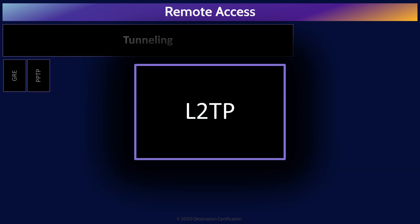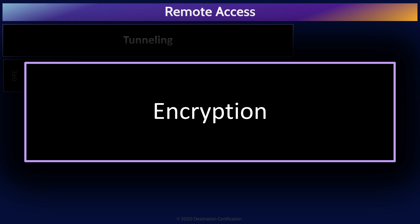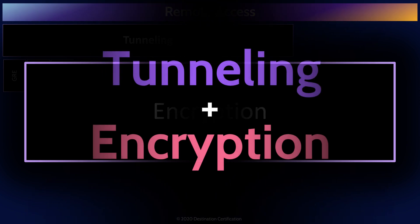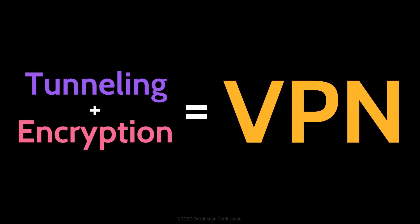L2TP, Layer 2 Tunneling Protocol, is a successor to PPTP and includes many improvements, such as the ability to encrypt its control messages. But very importantly, L2TP on its own does not encrypt the data portion of a packet. Tunnels are typically used to connect two private networks together over the public internet, or to connect a remote device like a laptop to a corporate network. You should always assume that someone — probably multiple someones — are inspecting your data that transits the internet. Therefore, it is very important to encrypt the data being sent through a tunnel to provide confidentiality. That is a VPN: a virtual private network is an encrypted tunnel where the data sent through the tunnel is encrypted.